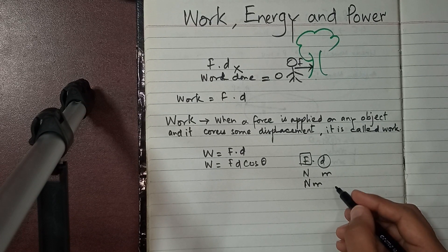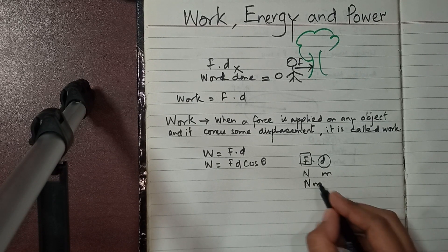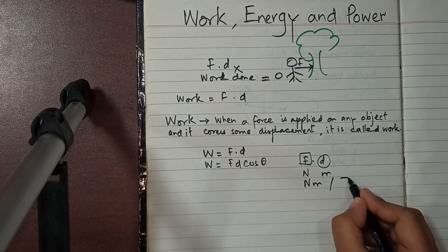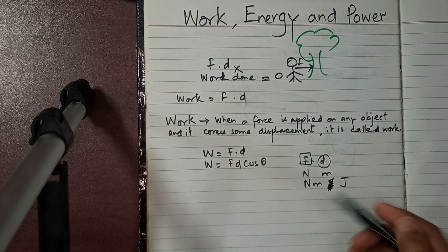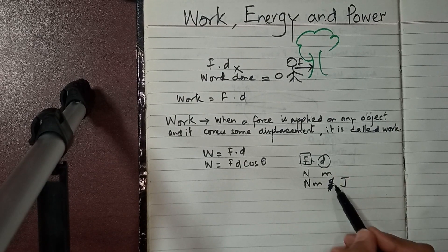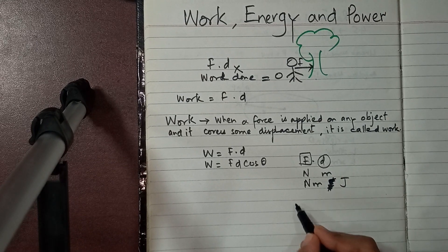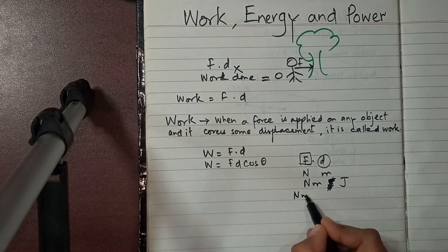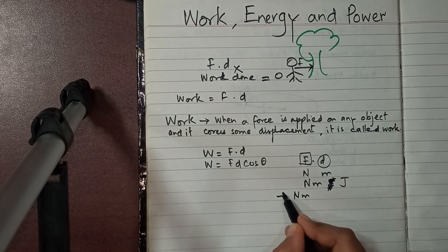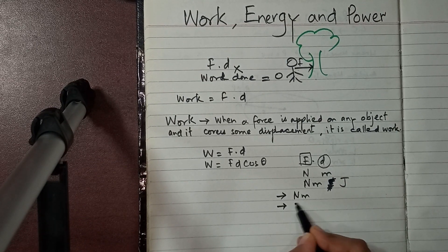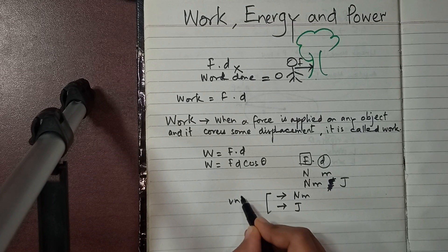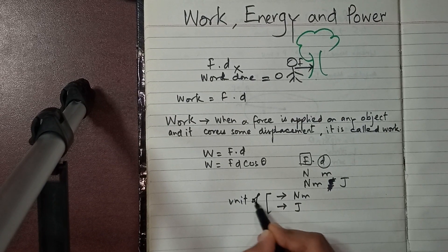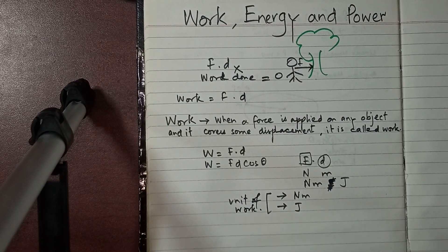The unit of work is force multiplied by displacement — that is Newton times meter, which we also write as Joules. So the unit of work is Newton-meter or Joules; both representations are equivalent.